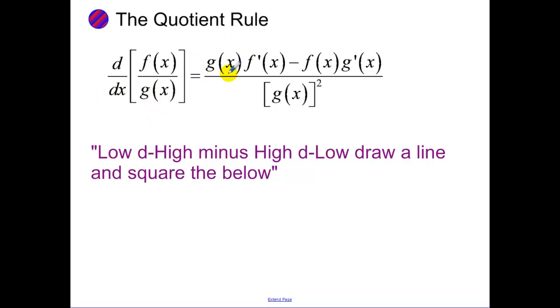Low d high, minus high d low, draw a line, square the below. So it's bottom, derivative of the top, minus top, derivative of the bottom, draw a line, you don't take the derivative of the bottom, but remember to square it, don't forget that squared.